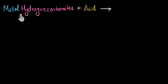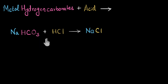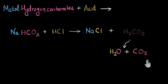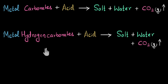Now let's react metal bicarbonate, or metal hydrogen carbonate, with an acid. Taking sodium hydrogen carbonate, NaHCO₃, and reacting it with hydrochloric acid — this is also a double displacement reaction. Sodium will displace hydrogen and combine with Cl, forming NaCl, and hydrogen will combine with HCO₃⁻ to form H₂CO₃, which is not very stable and will further dissociate into water and carbon dioxide. So the same products are formed. In general, both metal carbonates and metal hydrogen carbonates react with acids to give salt, water, and carbon dioxide gas. Now let's look at this in an actual experiment to see how to experimentally verify that carbon dioxide gas is getting released.